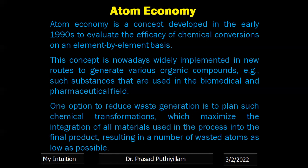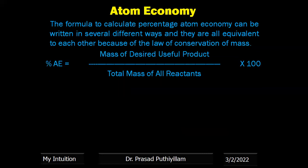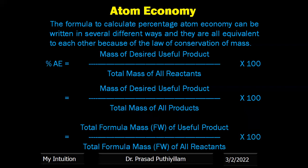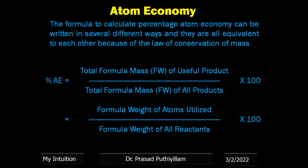If an atom is wasted, that much wastage will be generated. There are different formulas used to calculate the percentage atom economy, but all are the same because it depends on the law of conservation of mass. The percentage atom economy can be calculated as the mass of desired useful product divided by total mass of all reactants multiplied by 100, or mass of desired useful product divided by total mass of all products — all giving the same result since they are based on the law of conservation of mass.